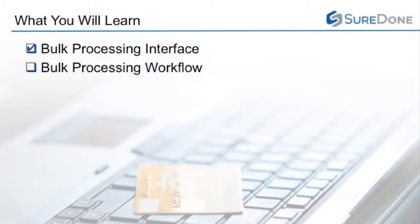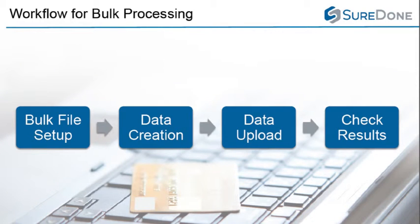So let's take a look at the bulk processing workflow. There are four basic steps to working through any bulk processing task, whether that be adding items in bulk, bulk editing items, ending items in bulk, or so on. First you'll need to set up your bulk processing file. Second you'll need to create the data you'll need and add it to the spreadsheet. Next you'll upload the completed file. Finally you'll check the results of the processed data to make sure that everything went smoothly.